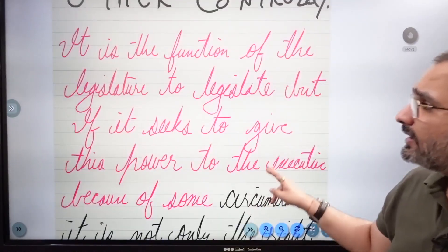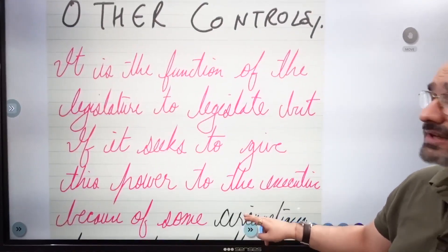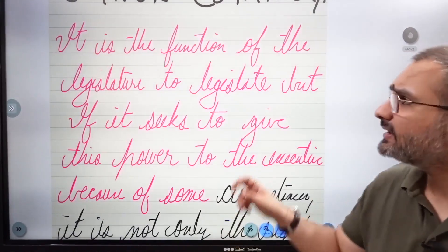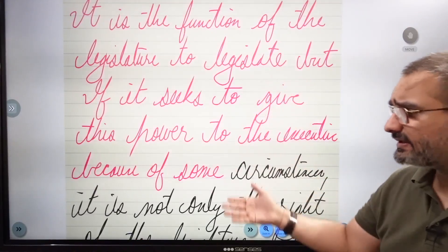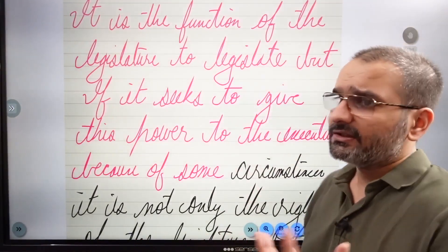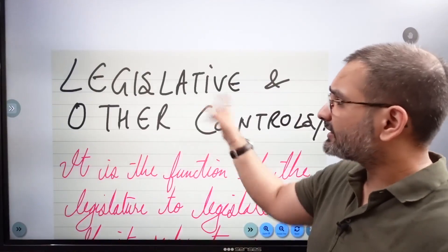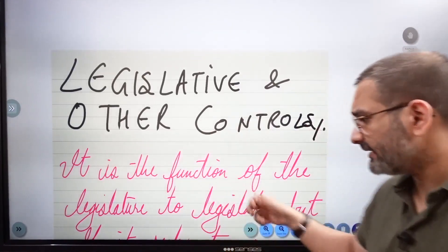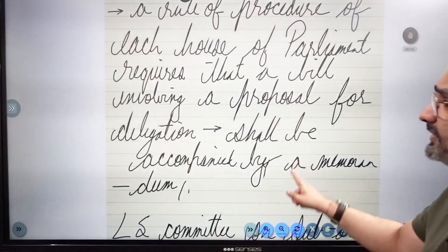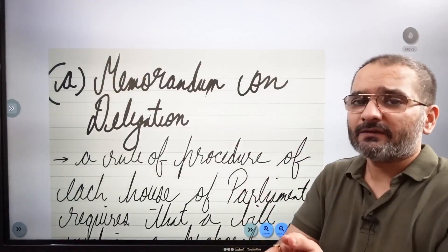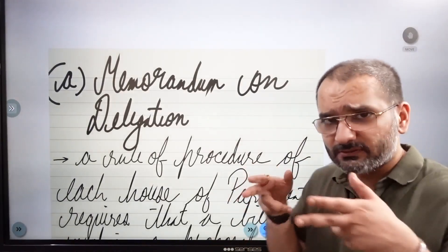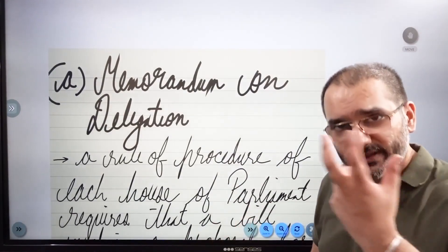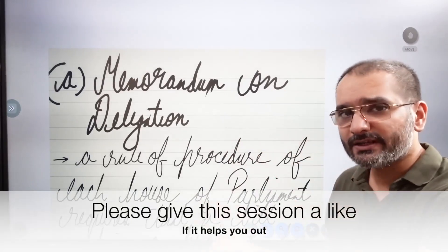Write this down word to word. This is how we explain to the examiner why legislative control is needed. Why is legislative control over delegated legislation needed? Because it is primarily the duty of the legislature — when it is delegating the power of legislation to the executive — it needs to check it and control it as well. These are basically legislative controls over delegated legislation.